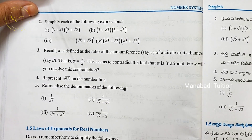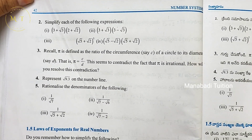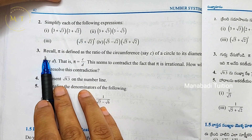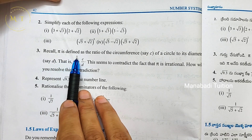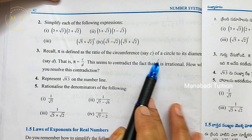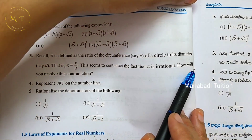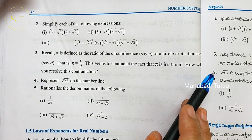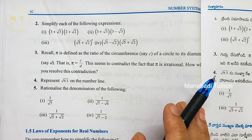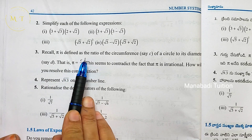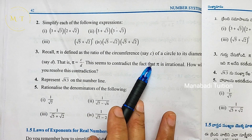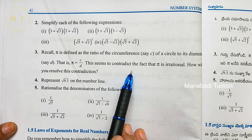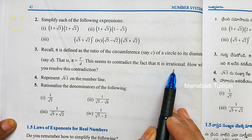9th class math, chapter 1, Number Systems, Exercise 1.4, questions 3, 4, and 5. Question number 3: recall that pi is defined as the ratio of the circumference of a circle to its diameter, so pi equals C by D. This seems to contradict the fact that pi is irrational.